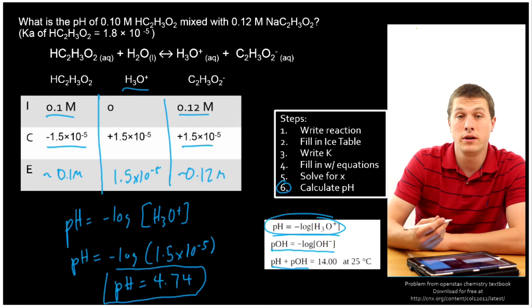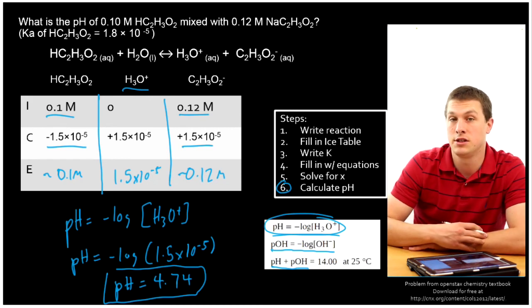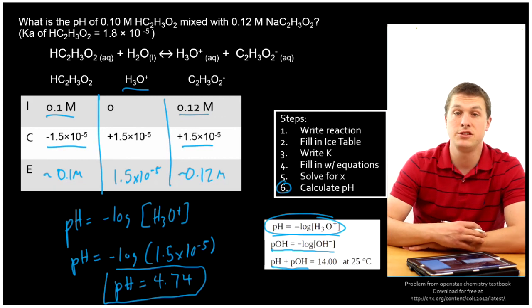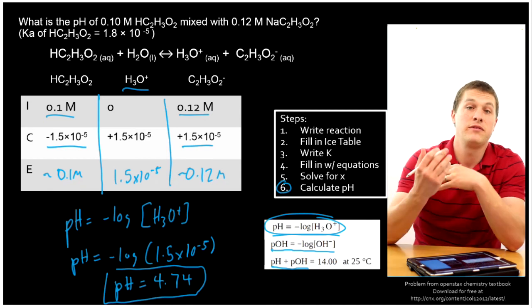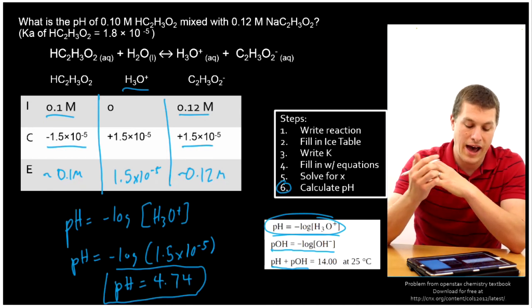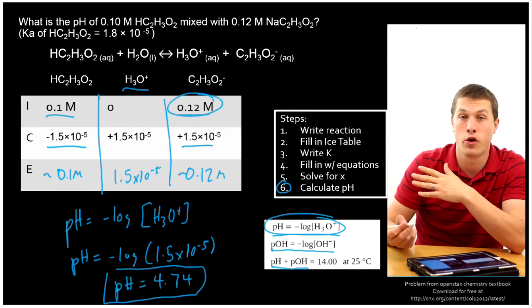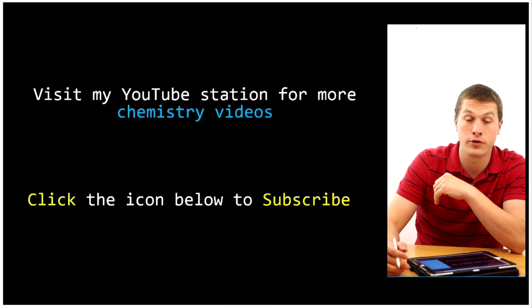So if you have a buffer, it resists changes to pH. You can make it with a weak acid and its conjugate base or with a weak base and its conjugate acid. If you want to know its pH, you can use an ICE table. And the only thing that's different here, rather than the previous ICE tables you might have done, is that you have to include the concentration of your conjugate acid or base, which will be given to you in your problem. I hope that was helpful for you.